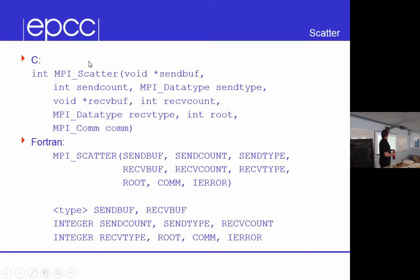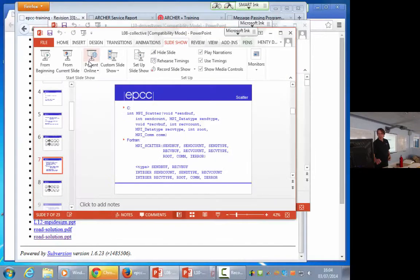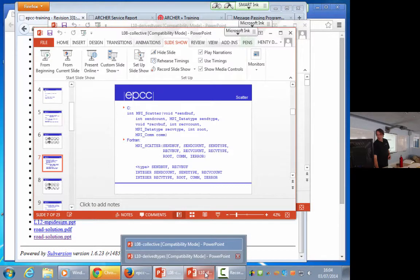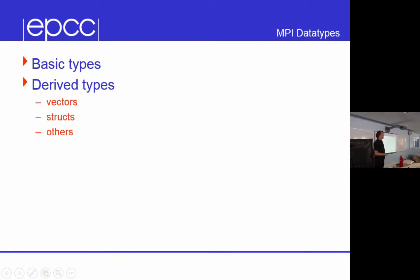However, after the lecture we're about to do on derived data types, hopefully you'll have some understanding of why it's possible to use different types. Types can match even if they're not the same — that's the feature of derived types. So I'm now going to go into the derived types lecture. MPI has basic types, but it also has derived types.